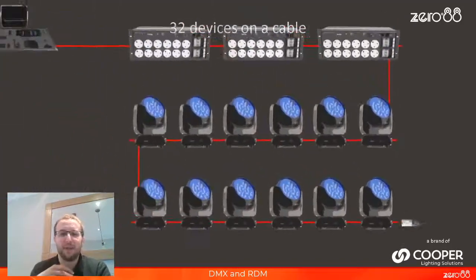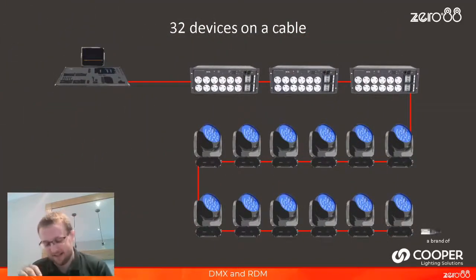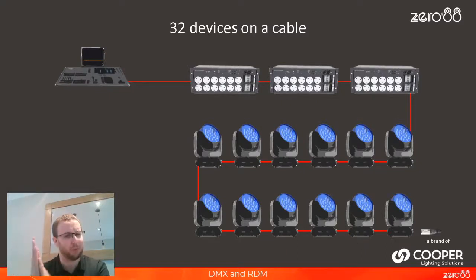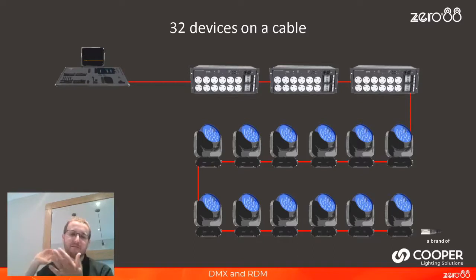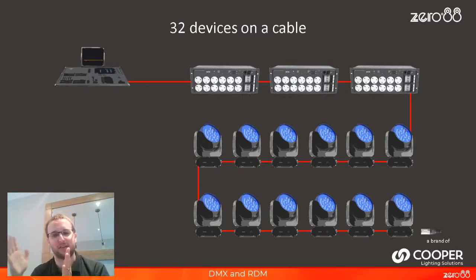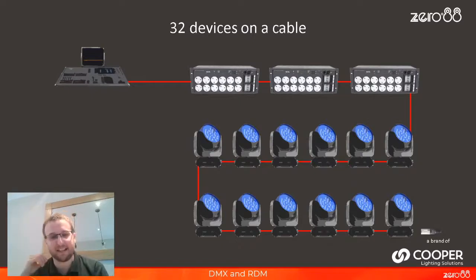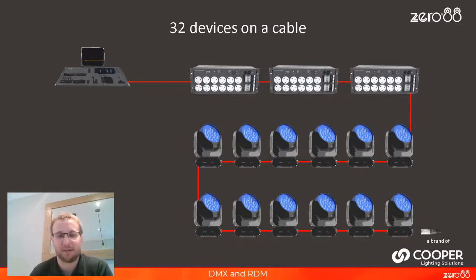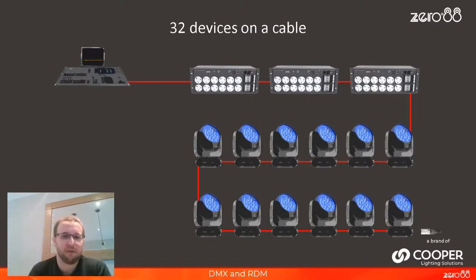Officially you do have to have a DMX Terminator. It stops what are called reflections — if I ran into a brick wall, I'd bounce back; but with a mattress gaffer-taped to the wall, it softens the blow. The DMX Terminator does that: it stops reflections down the line, which can cause the last couple of moving lights to get confused. Lots of us run DMX setups without Terminators and it's probably fine, but when you get into RDM, the Terminator becomes more crucial. I strongly encourage you to use DMX Terminators.